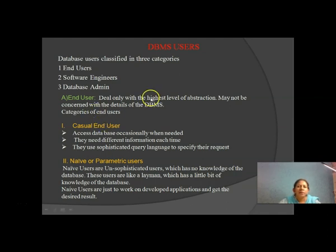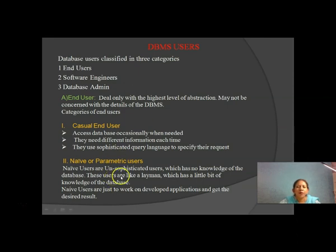End users have subtypes. Casual end users are those who occasionally withdraw data and need different information each time — sometimes about students, companies, or employees. They use a sophisticated query language to specify their requests. Naive or unsophisticated users have no knowledge of the database.